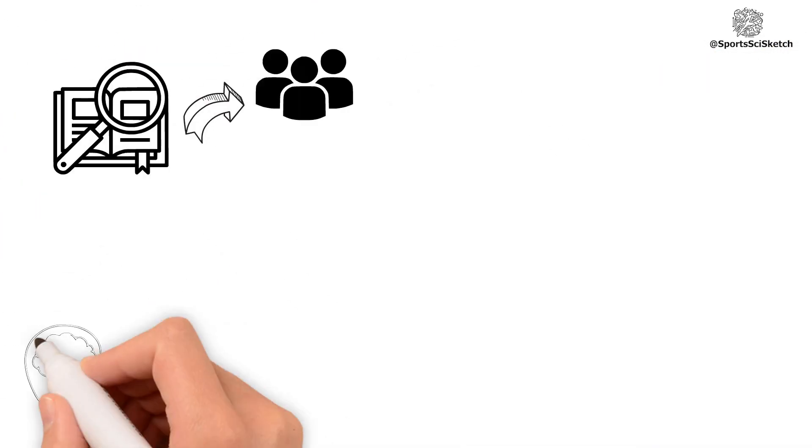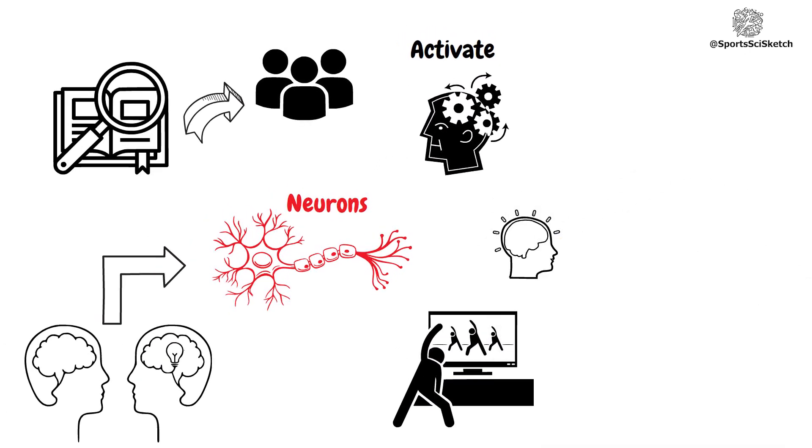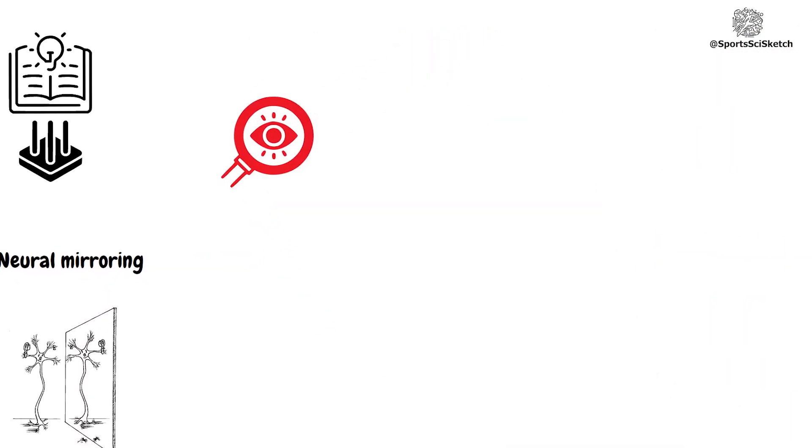When we observe others, our brain's mirror neurons activate, simulating the action in our minds. This neural mirroring lays the foundation for learning through observation,